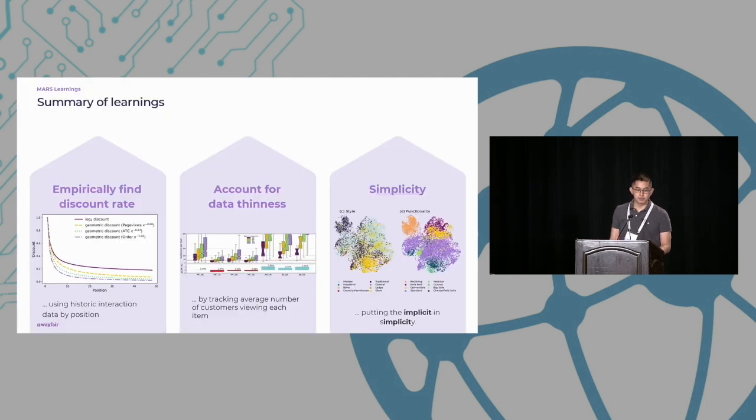So to summarize our findings, we found that the standard logarithmic discount for NDCG is insufficiently strong, and we needed to empirically determine our own discount by looking at historic order rates by position, and that this enabled us to align our offline evaluation results with our real A-B test results. We also found that data thinness can be kind of diagnosed and tracked by measuring the number of customers viewing each item, and that by standardizing this across our different models, we were able to ensure that they were all winning their individual A-B tests. Lastly, we showed that our model is able to learn very powerful embeddings that capture, for example, style and functionality and material entirely implicitly without using any other information other than customer-item interactions.